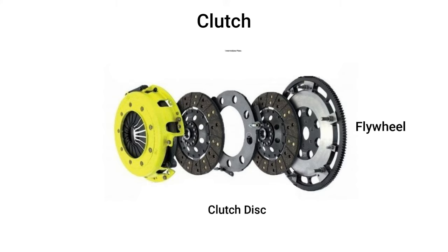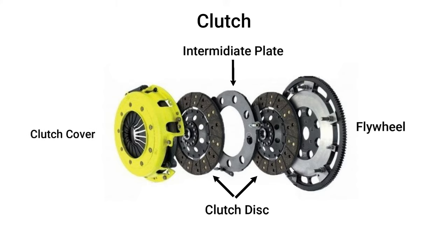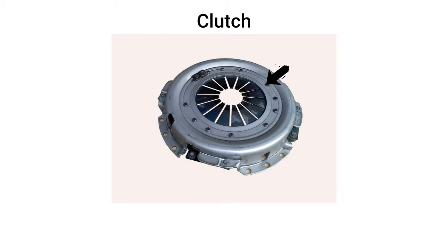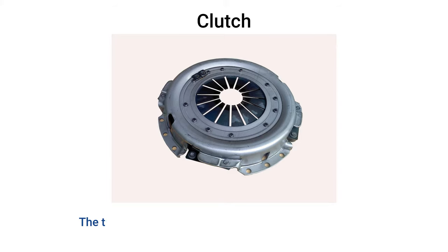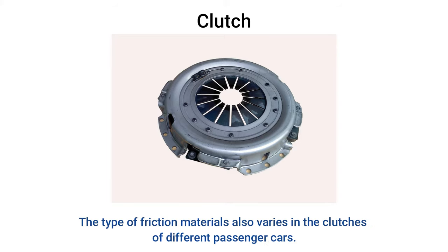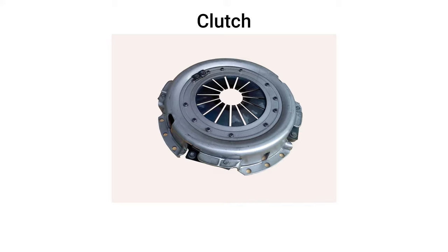The clutches consist of a flywheel, clutch disc, intermediate plate, and clutch cover. Most designs use a number of coil springs, but some use a diaphragm or conical type spring. The type of friction materials also varies in the clutches of different passenger cars. Let's see the different types of clutches that are used in automobile industries.